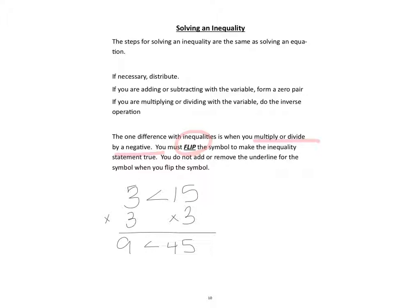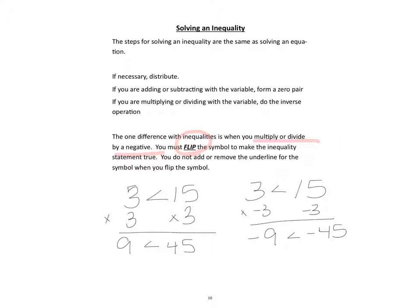If I were to do those same numbers and I were to multiply by negative three, we would end up with negative nine being less than negative 45. We know that not to be true because negative means the opposite, and so therefore that is not true.